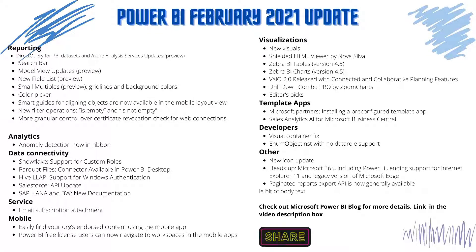Welcome to Power BI February 2021 update. This month includes a couple of updates and ongoing previews, as well as a new color picker that features an RGB color selector and a search bar to make discovery of features easier. Additionally, introduction of a new filter operation and an easier way to configure mail subscription attachments.